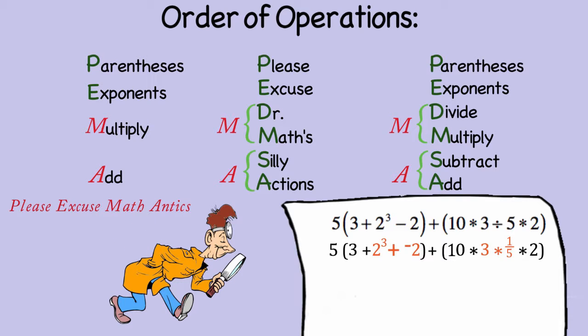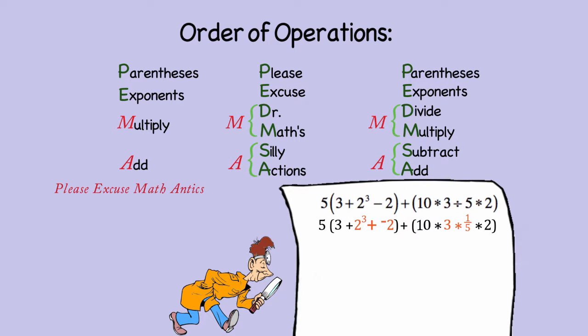Now, if we want to solve this problem, we would simply go back to our order of operations. We would simplify the exponent, then we would multiply, and last we'd add. In both situations, we got a final answer of 57.